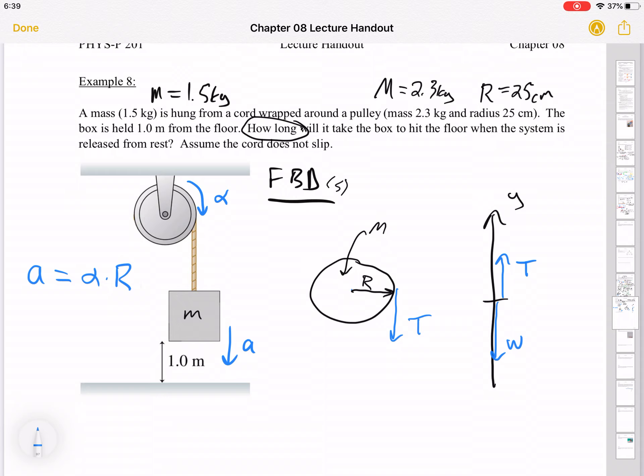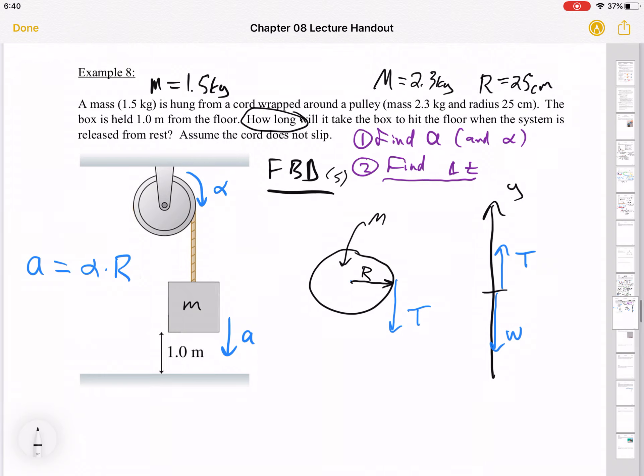As this mass goes down, this guy rotates counterclockwise. Yeah, the hanging mass would have a negative acceleration. Counterclockwise acceleration is what we call negative as well. So that means they have the same sign. So all I need to do is a equals alpha times the pulley radius. And if I knew this acceleration, I could then use kinematics to find how long this takes to fall. So let's find, let's do that, we'll say 1, find a and alpha, and then 2, find delta t. So I know that we can do find delta t, we've been doing that since early chapters in this book. So let's just find a and we'll leave delta t as an exercise for the observer.